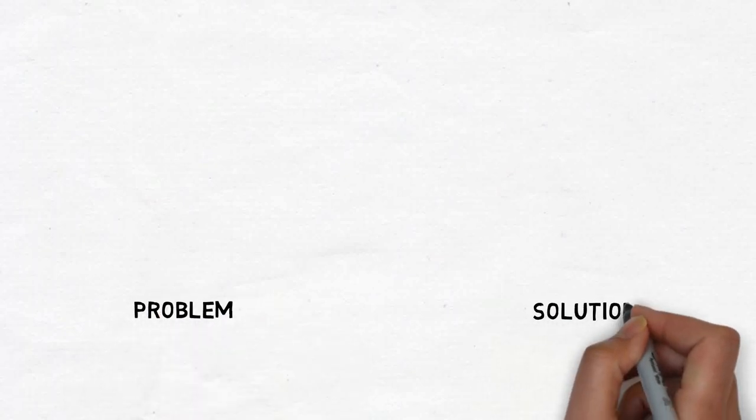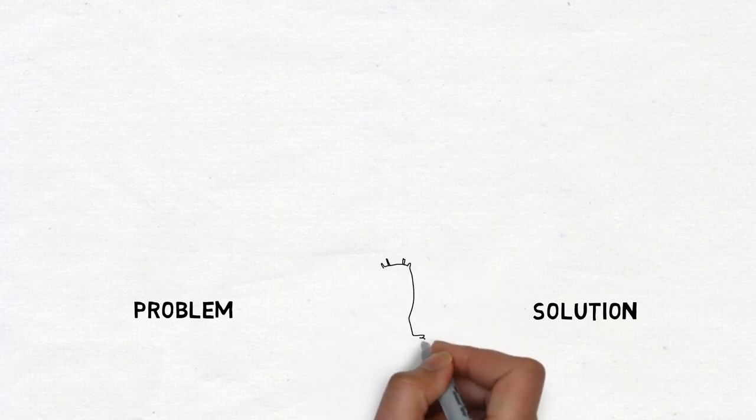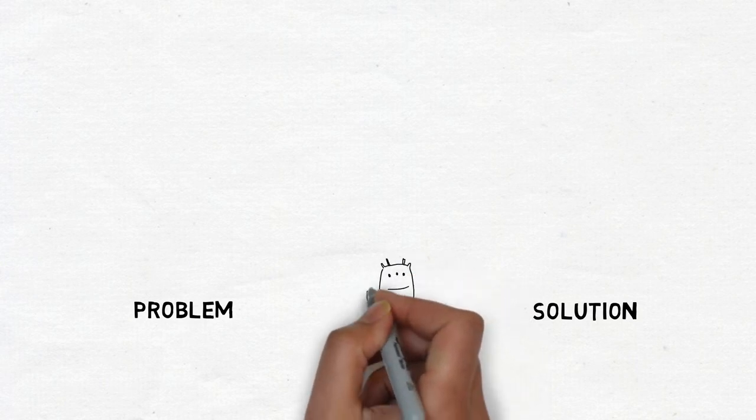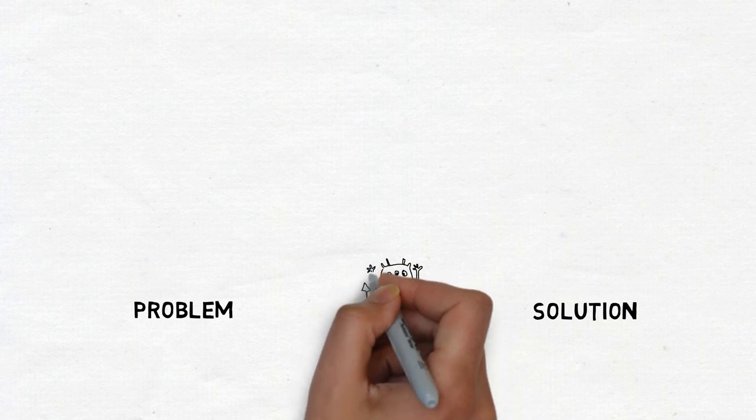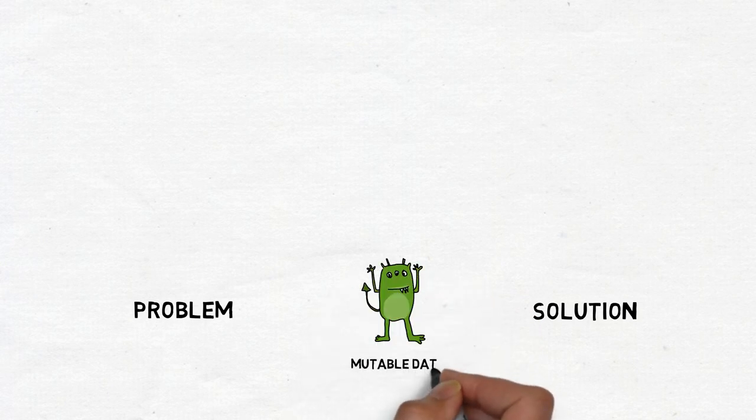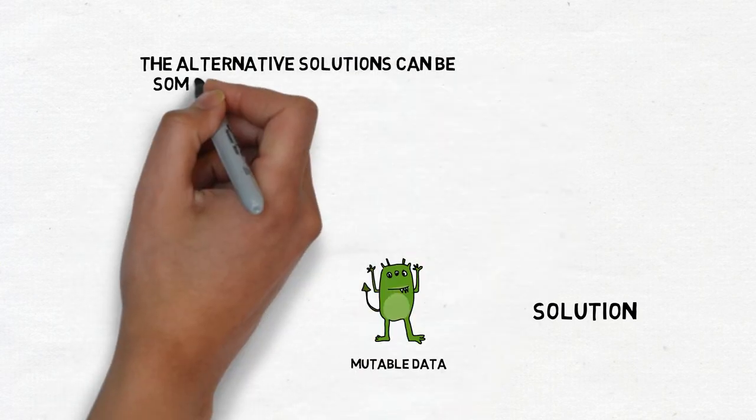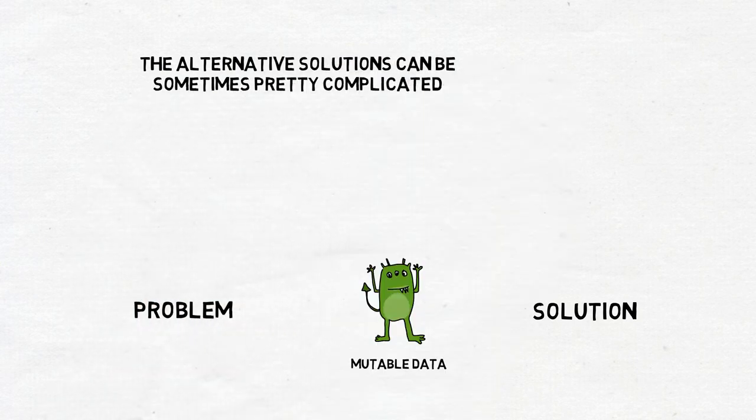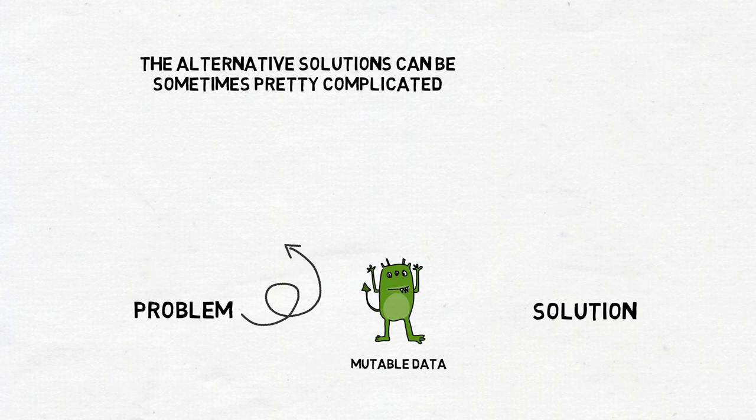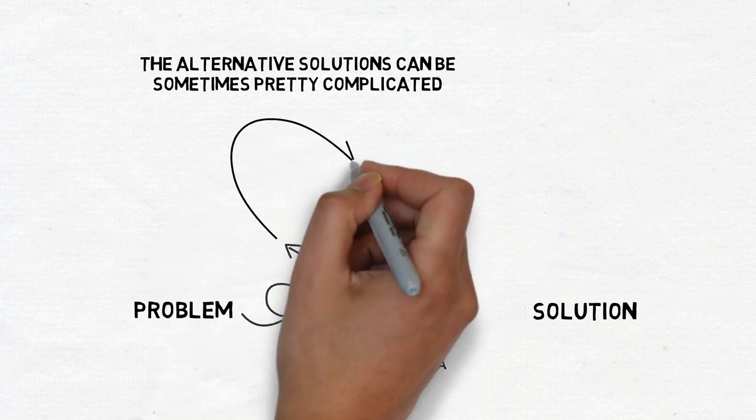One very cool thing about programming with functions is that the data we work on does not have to be mutable so often. In theory, in languages like Haskell, it's possible to never use mutability. But the alternative solutions can be sometimes pretty complicated or at least very weird-looking for an average coder.